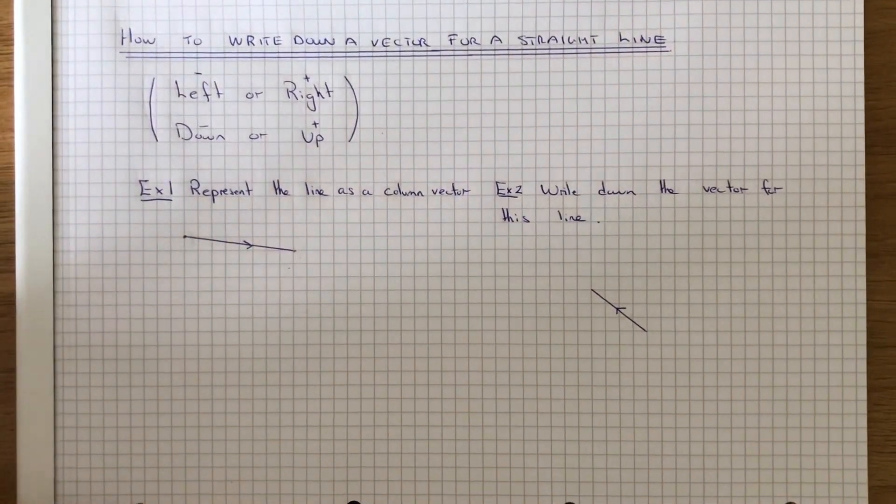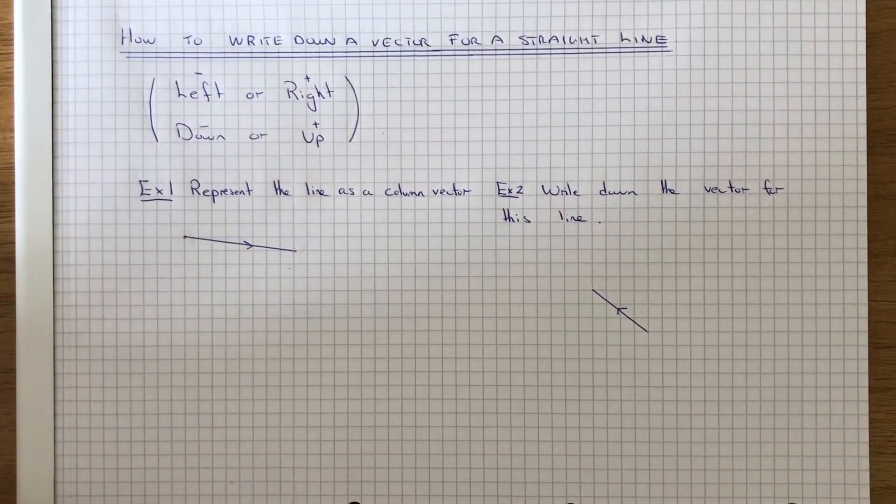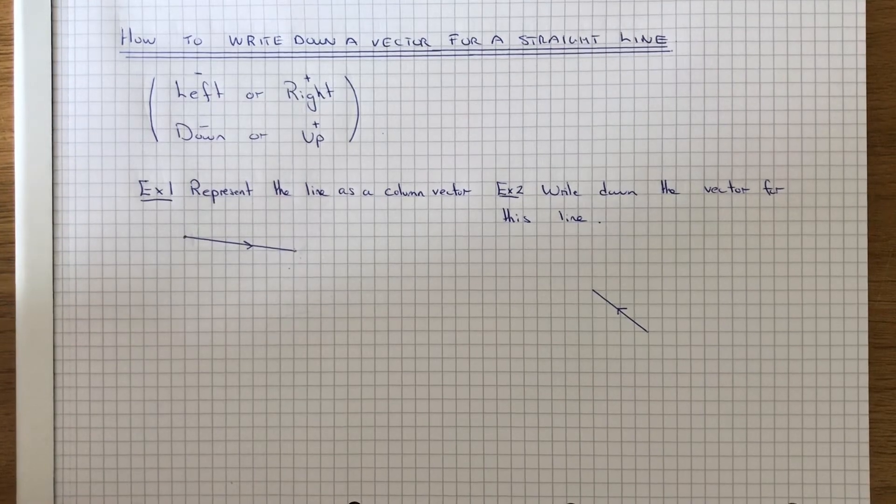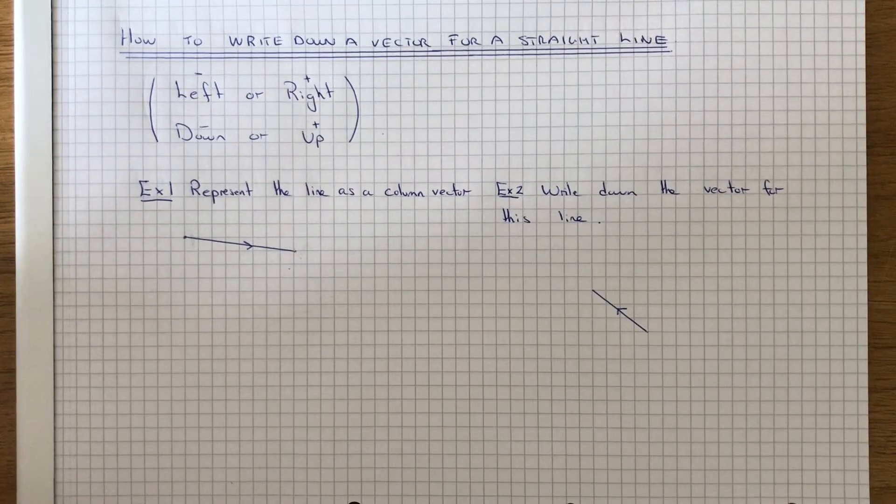Welcome back, this is Maths3000. Today I'm going to show you how to write down a line as a column vector.